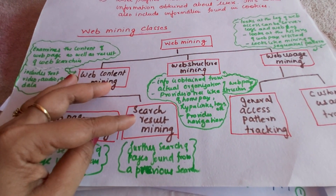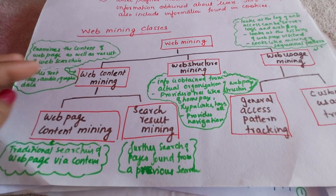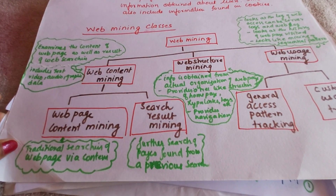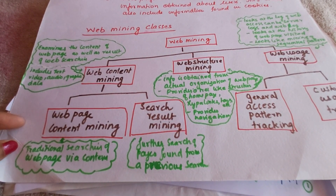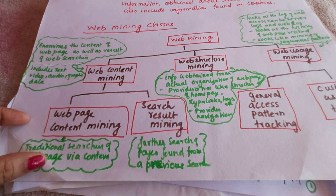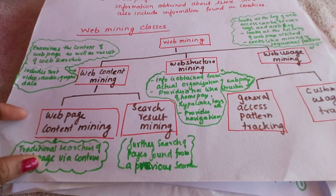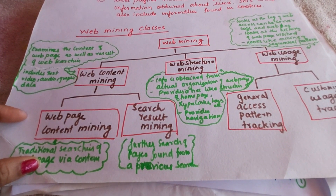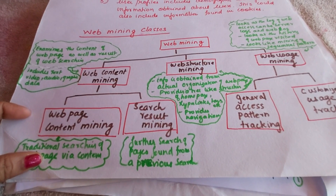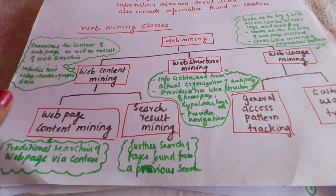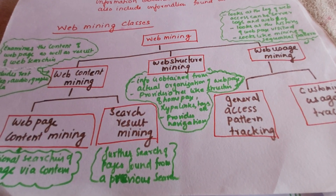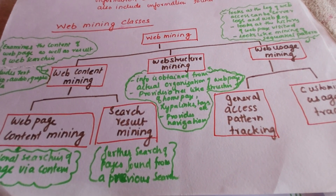Web content mining is divided into two types: web page content mining, which is the traditional way of searching a web page with the help of content, and search result mining, which is the further search of pages found from the previous search. Web structure mining obtains information from the actual organization of the web page.